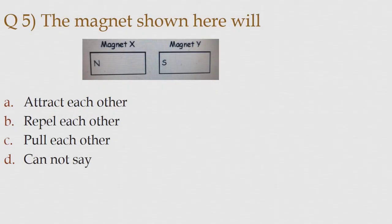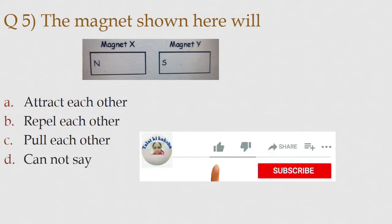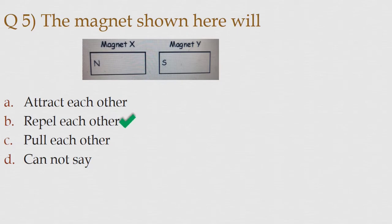Question number 5. The magnets shown here will Option A: attract each other. Option B: Repel each other. Option C: Pull each other. Option D: Cannot play. The correct answer is option B: Repel each other.